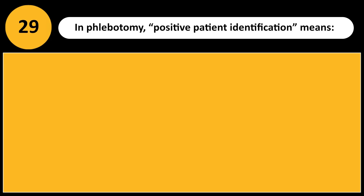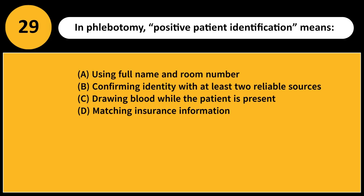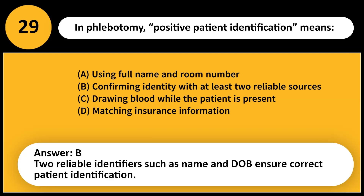In phlebotomy, positive patient identification means: A. Using full name and room number. B. Confirming identity with at least two reliable sources. C. Drawing blood while the patient is present. D. Matching insurance information. Answer: B. Two reliable identifiers such as name and DOB ensure correct patient identification.